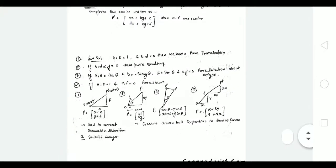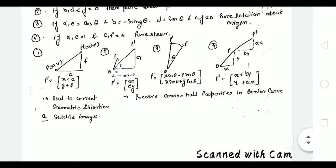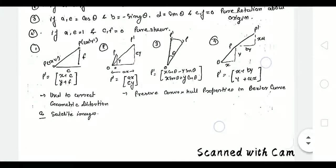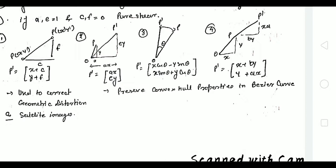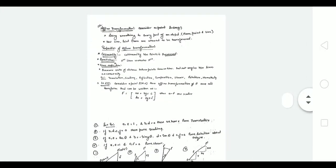So like this you can use affine transformation. The general formula for 2D affine transformation is: P' = (ax + by + c, dx + ey + f), where a to f are scalar quantities. The advantages are: it is used to correct geometric distortion — for example, when taking satellite images that are blurry, affine transformation makes them clearer. Another advantage is that it preserves convex hull properties in Bezier curves.